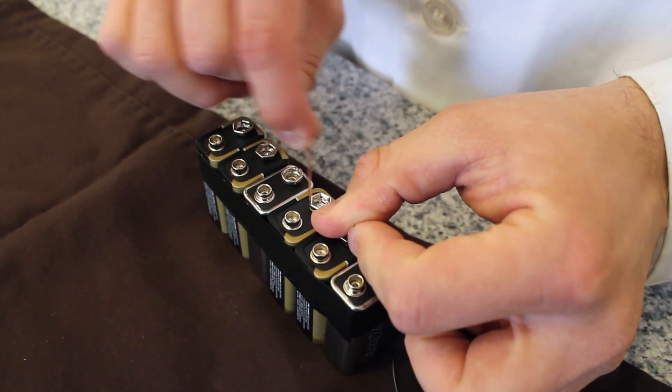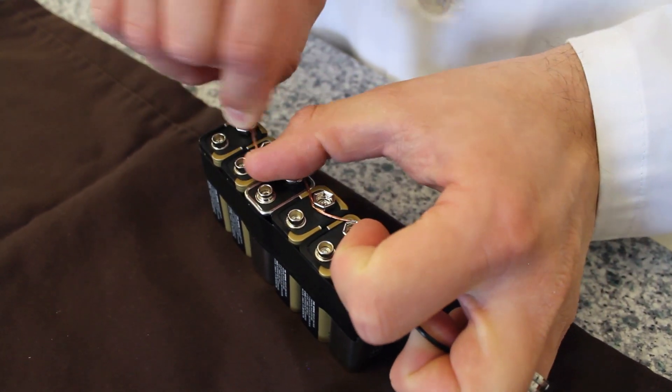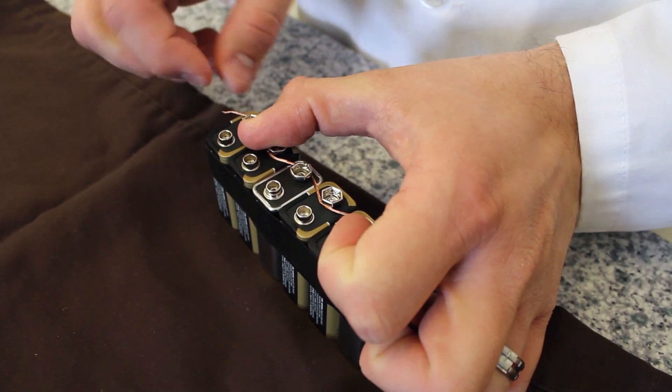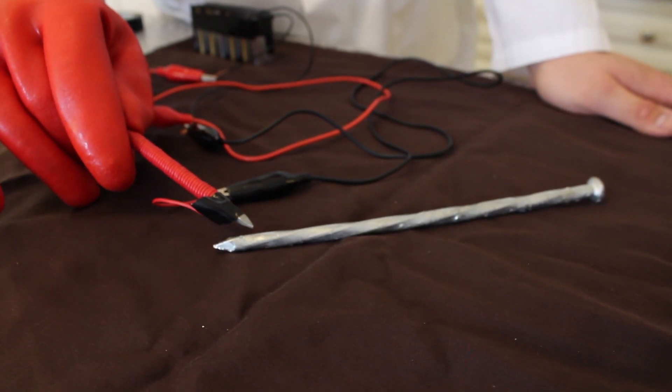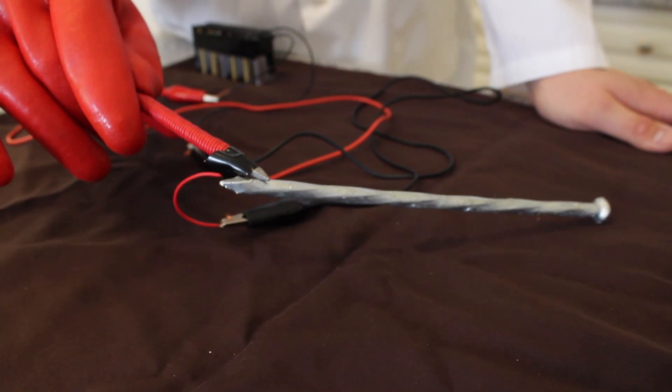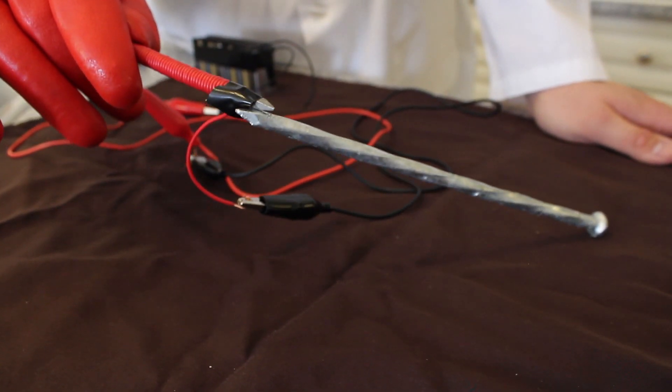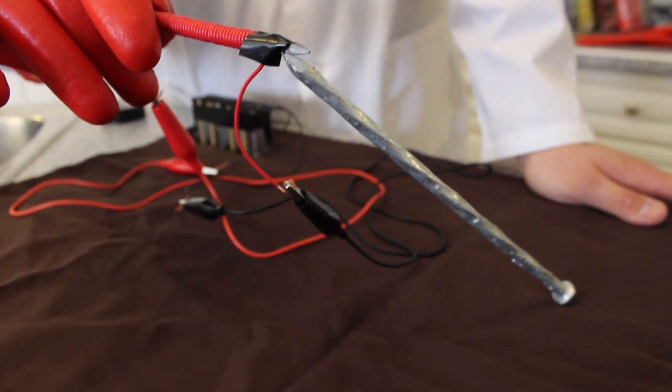Also, when we connect multiple batteries in series, we generate more current or a greater number of electrons traveling through a wire. This increase in current causes more magnetic waves, generating a stronger magnetic field, and consequently, the stronger our electromagnet will be.